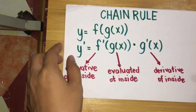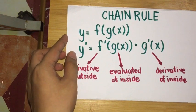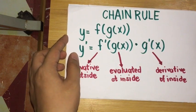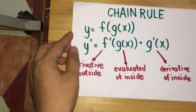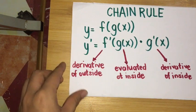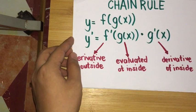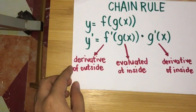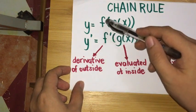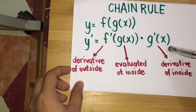Hi guys, we will discuss the chain rule for differentiation. Chain rule is one of the most used techniques for finding the derivatives of functions, particularly composite functions. If we have a composite function y = f(g(x)), we can find its derivative y' using chain rule as f'(g(x)) times g'(x). We interpret this as finding the derivative of the outside function f(x) evaluated at the inside function g(x), times the derivative of the inside function.